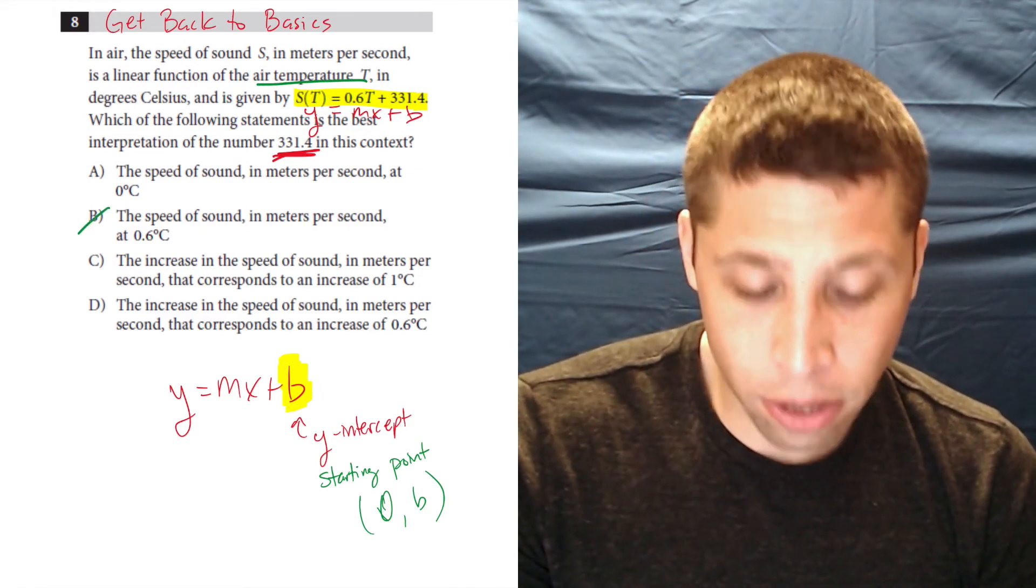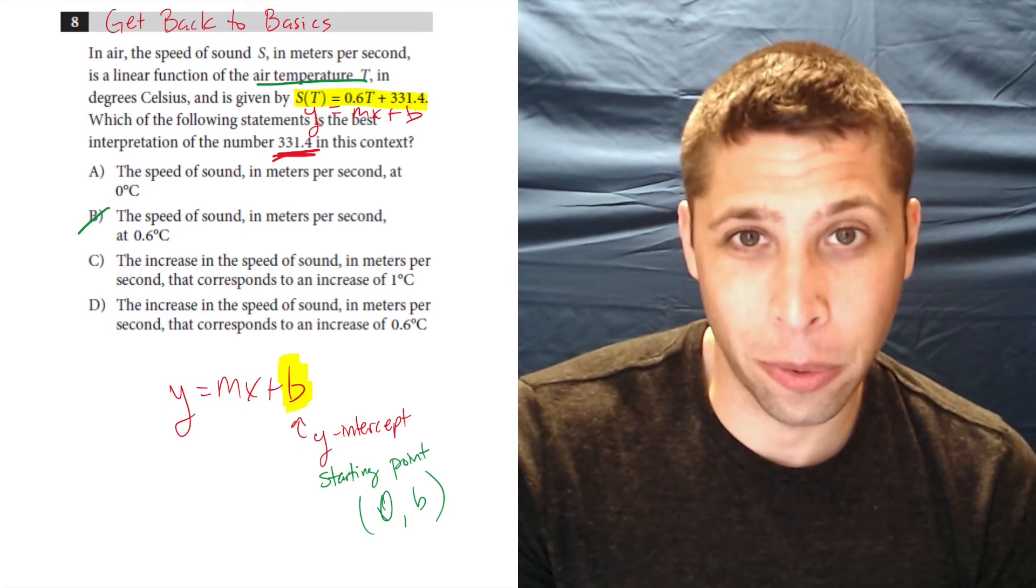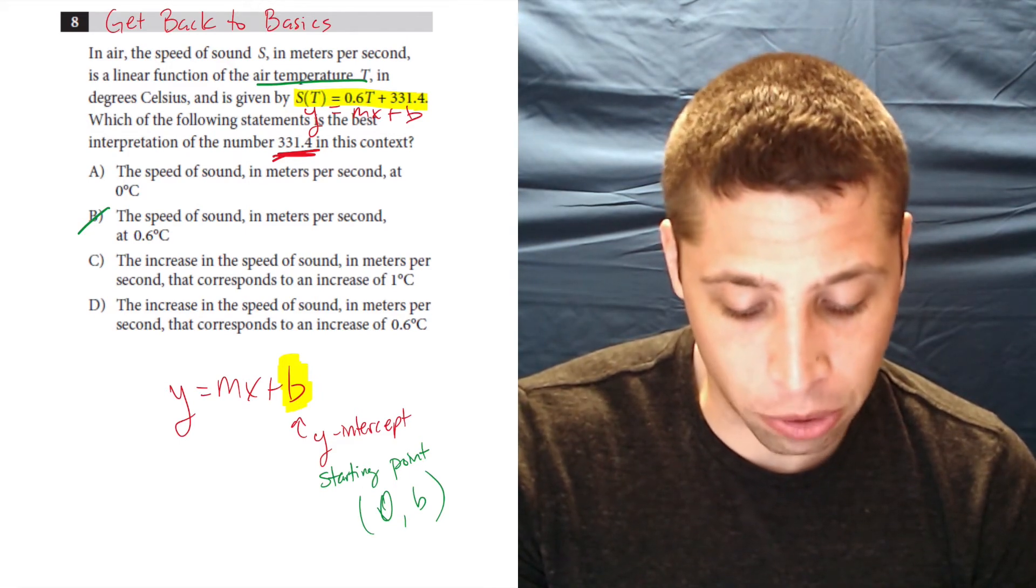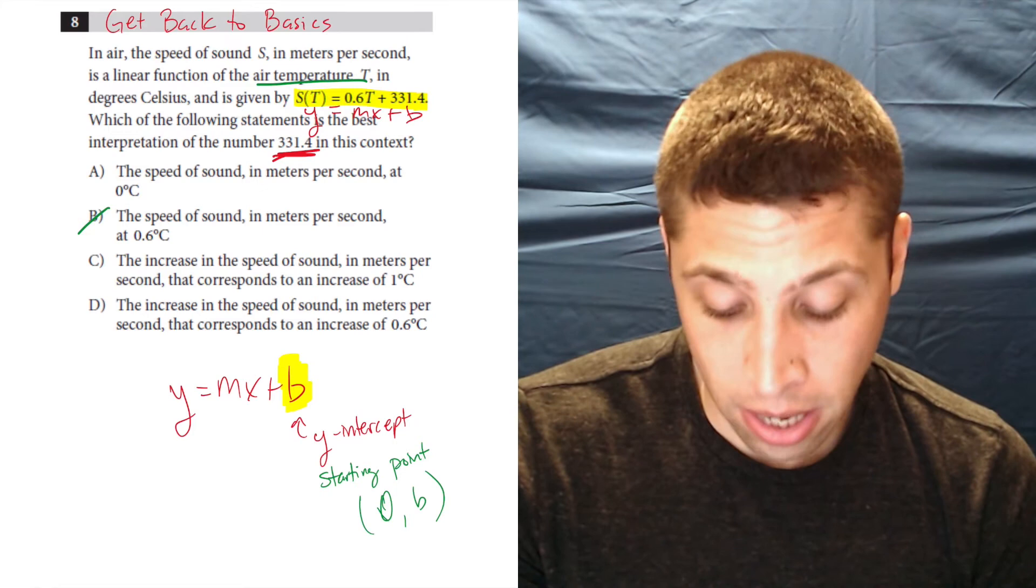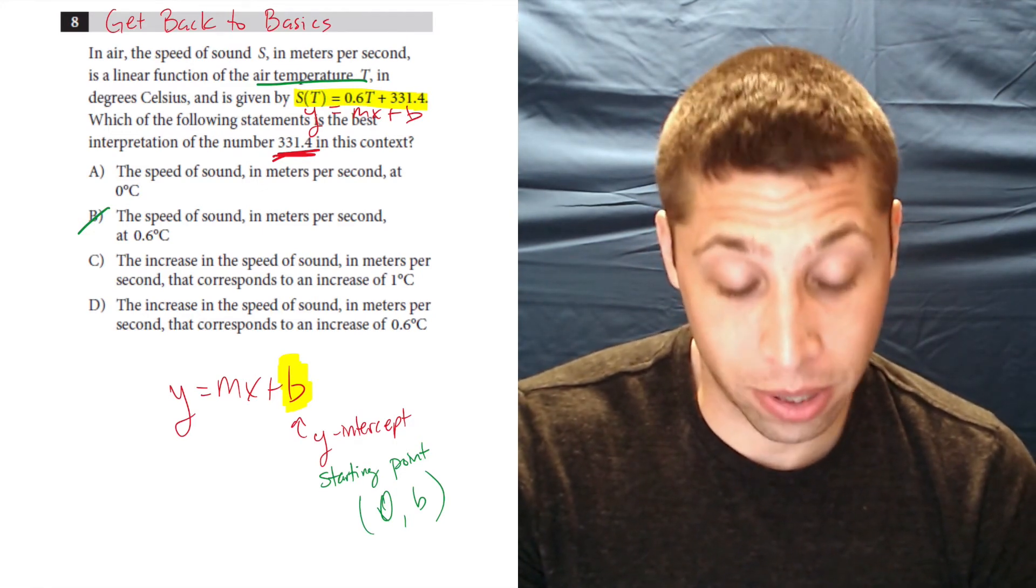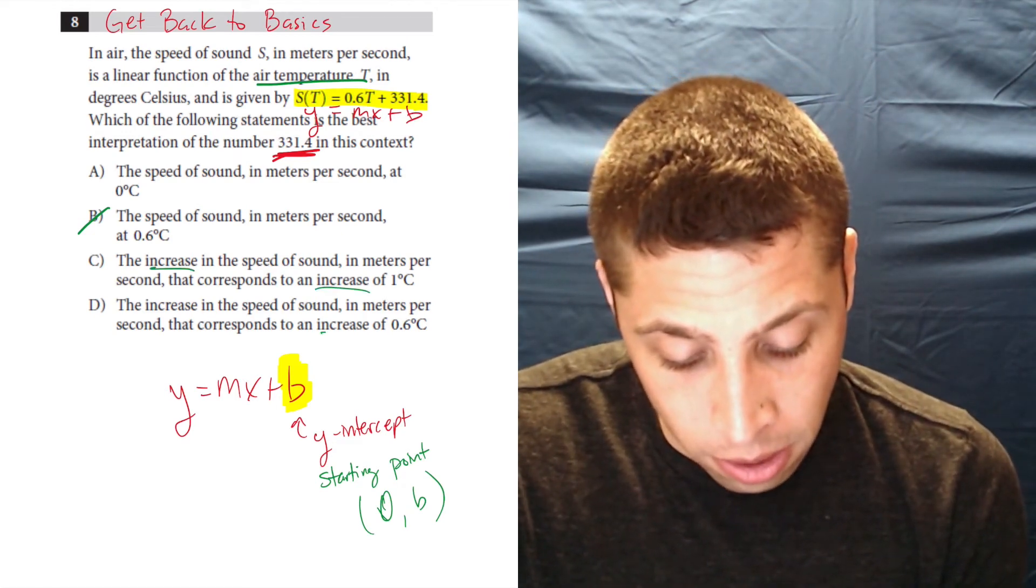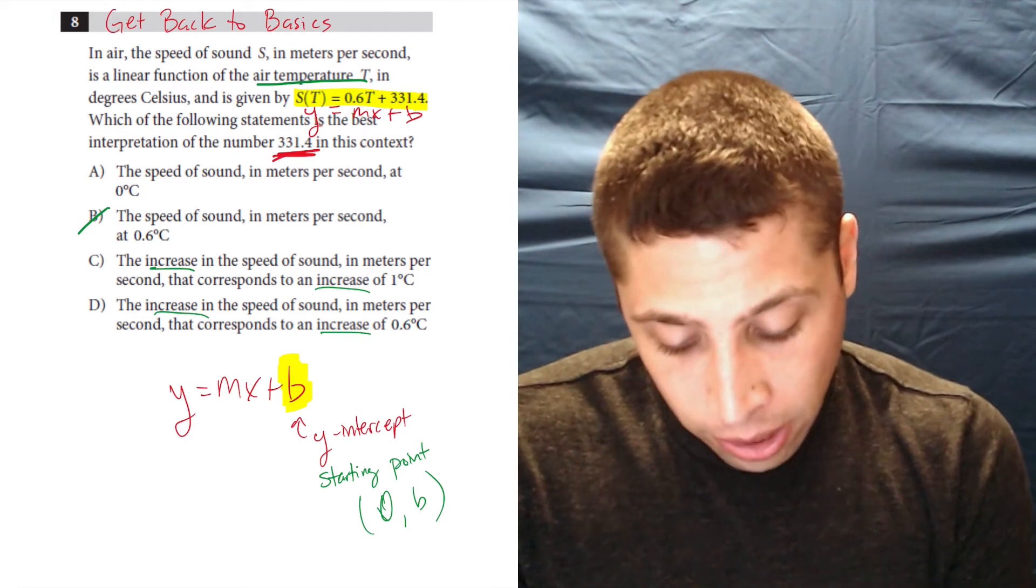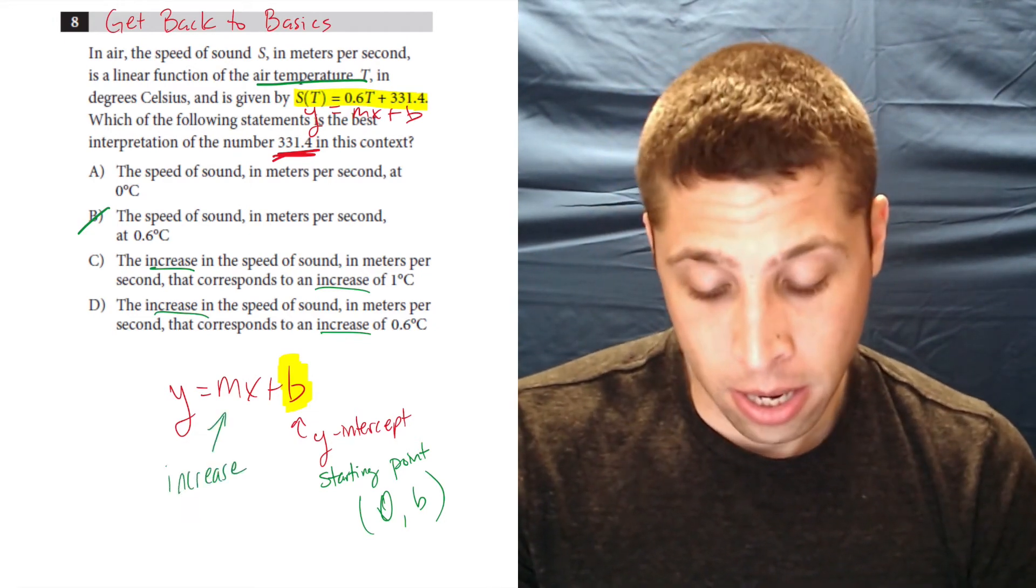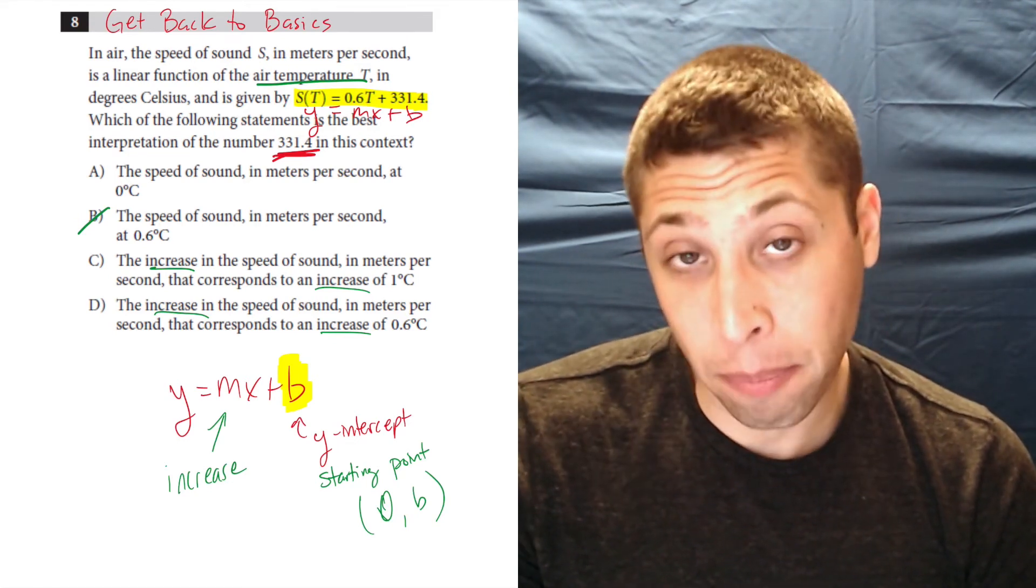And then C and D are really where it's obvious that there are two parts of a linear equation. They're asking about the other one. So the increase in the speed of sound in meters per second that corresponds to an increase of one degree Celsius, the increase in the speed of sound in meters per second that corresponds to an increase of 0.6 degrees Celsius. Well, they're using a bad word here. They're using the words increase. An increase is what we would associate with the slope of the line, the rate of change. So that's not what they're asking about. That would be something like 0.6.